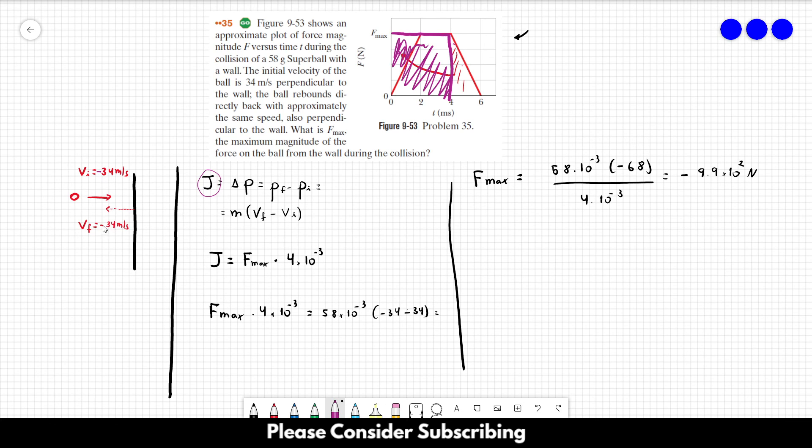So we could have chosen this to be negative and this to be positive. That would give us the correct sign. So the final answer is equal to 9.9 times 10 to the second newtons.